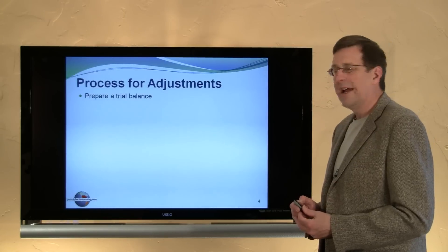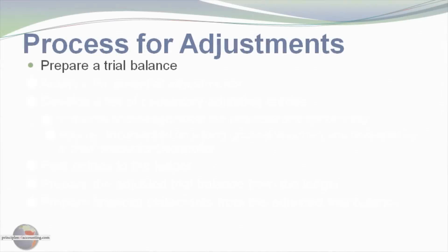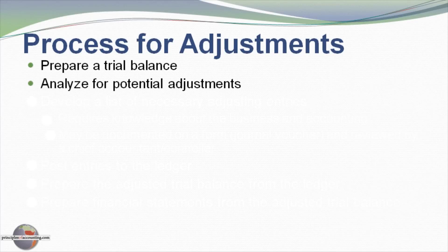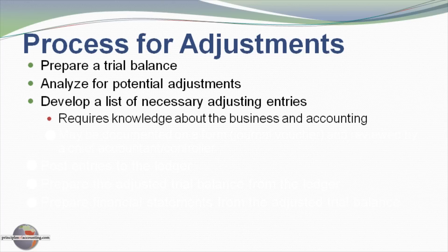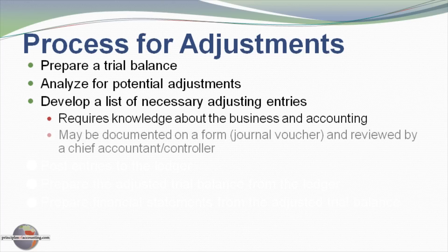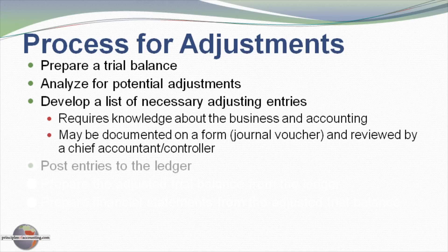Let's reflect on the entire process. We would first prepare a trial balance taken from account information in the general ledger. That information would be analyzed for potential adjustments, and from that analysis we would determine a list of adjusting entries. That would require intimate knowledge of the particular business. We would document those adjusting entries perhaps with a journal voucher or by review of a chief accountant or someone else prior to entering those adjustments in the accounting records.